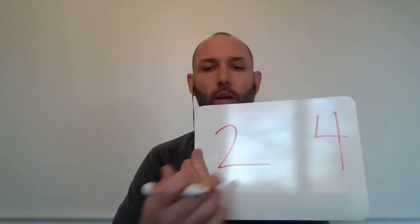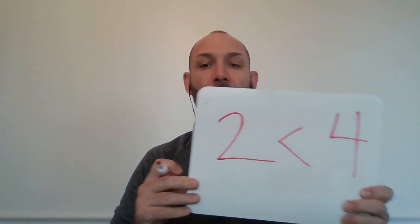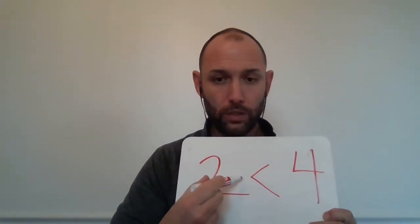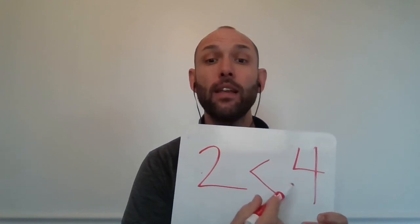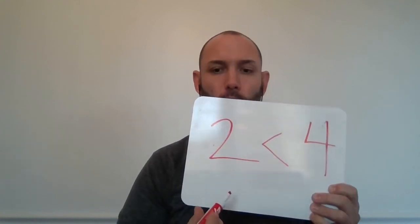What if I had this? What if I had the number two and I had four? Well, two is less than four. So I want to do it this way again, because the point always goes to the smaller number, the opening or the mouth wants to eat the bigger number. So this would be our less than. Go ahead and get that done.